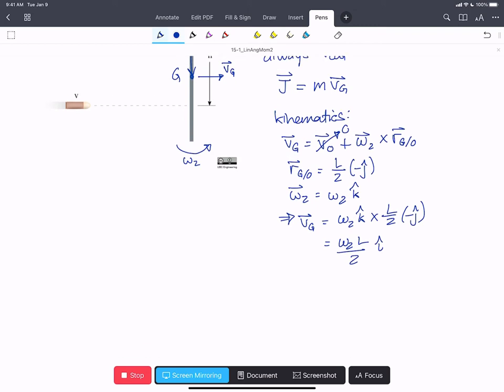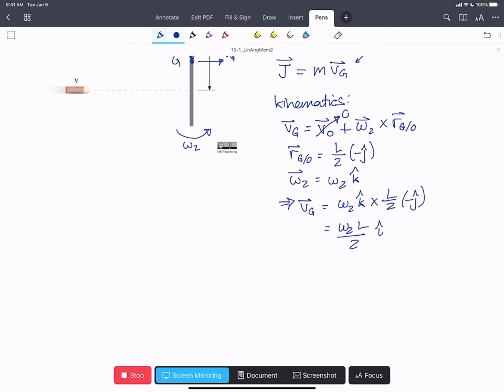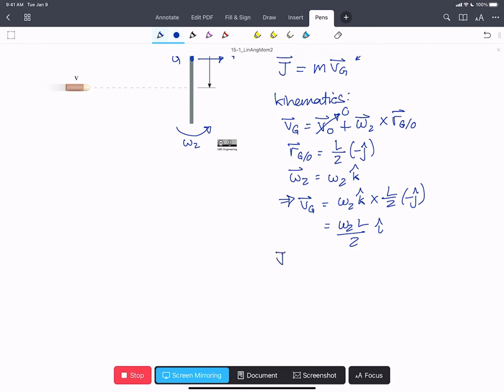If we substitute that into our expression for linear momentum, we find that J, the vector linear momentum, is 3.3 kilograms times our expression for V_G.